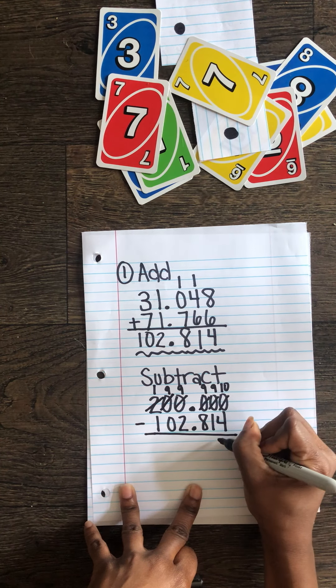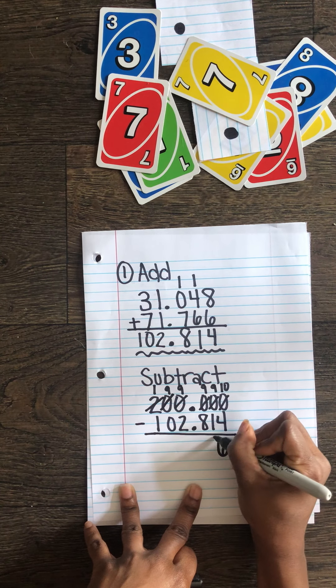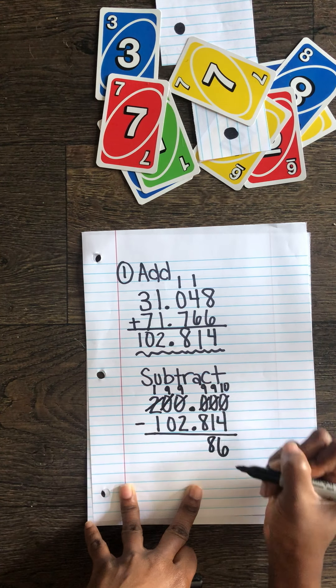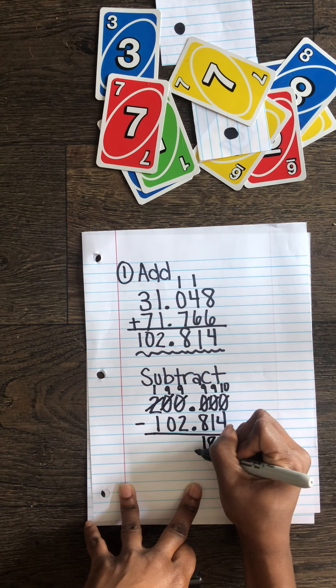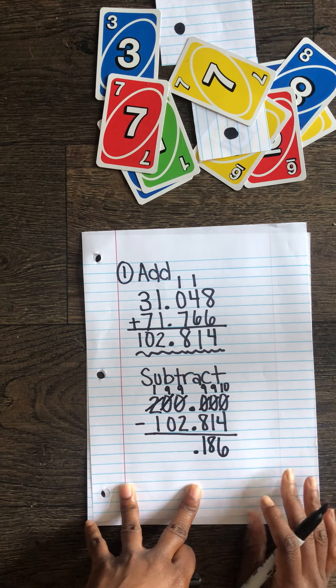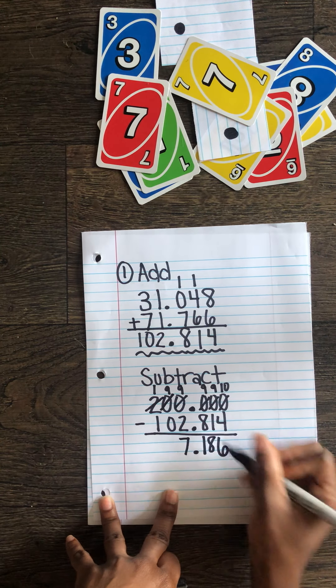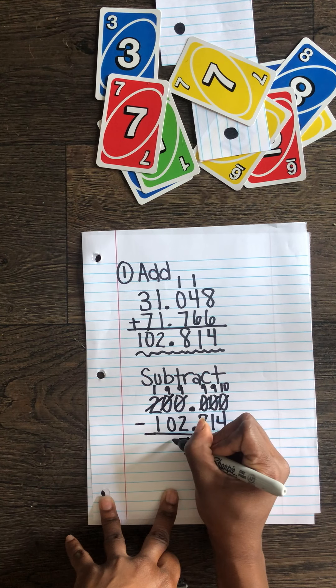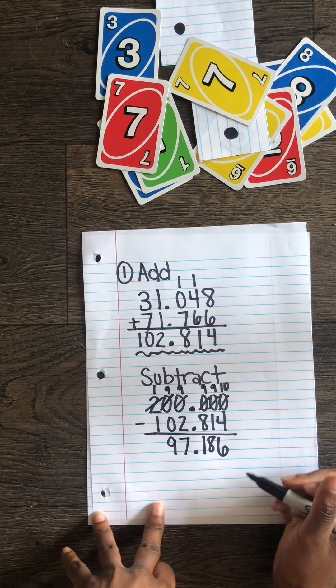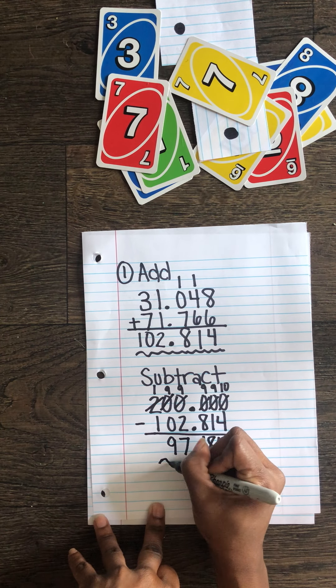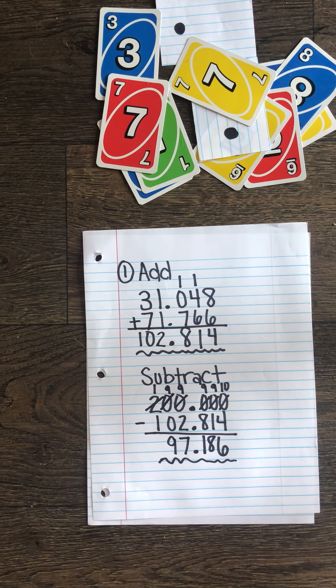Ten minus four is six. Nine minus one is eight. Nine minus eight is one. Remember we always keep that decimal in that same place. Nine minus two. Seven. Nine minus zero is nine. And one minus one is zero. So the sum or the difference of this is 97 and 186 thousandths.